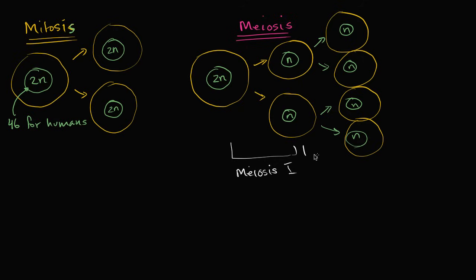And then in this phase, meiosis II, it's very similar to mitosis, except you're now dealing with cells that start off with the haploid number. And it's important to realize meiosis is not a cycle.